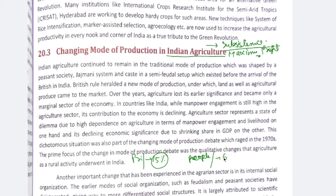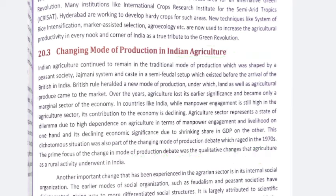Agriculture engages almost 60% of India's population, yet contributes only 15% of GDP. This is why it is said that contribution towards the economy is still declining. If you look at recent data from 2023, you will see that the contribution to the economy has declined. The Indian culture continued to remain in the traditional mode of production, which was shaped by the peasant society, the jajmani system and caste in a semi-feudal setup, which existed before the arrival of the British in India.